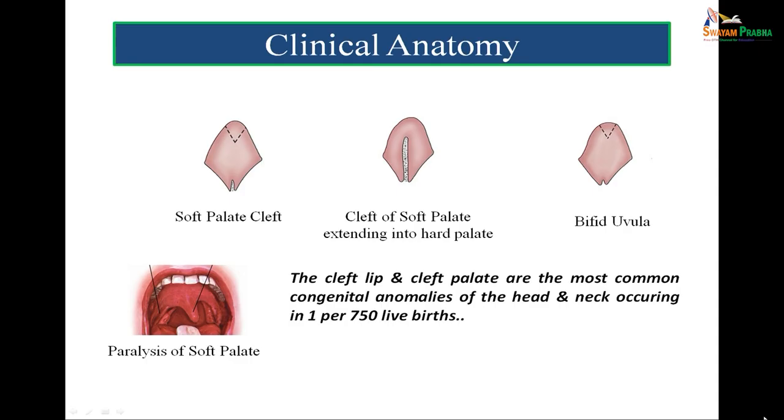Similar is the function of the soft palate. It acts as a traffic controller at a very crucial junction — the junction of air passage and food passage. It selectively allows the passage of air and food according to needs, controlling the flow at that junction. This soft palate is also important because of its developmental anomalies. Cleft lip and cleft palate are the most common congenital anomalies in the head and neck, with an incidence of 1 per 750 live births.